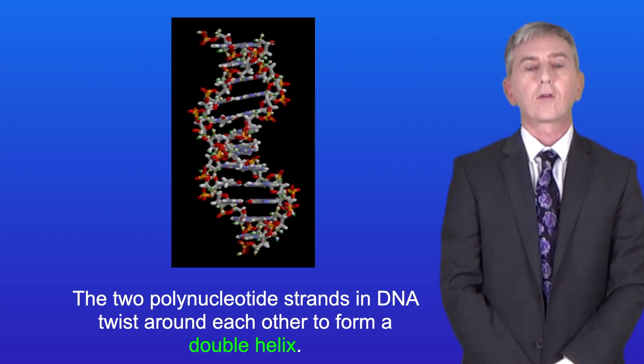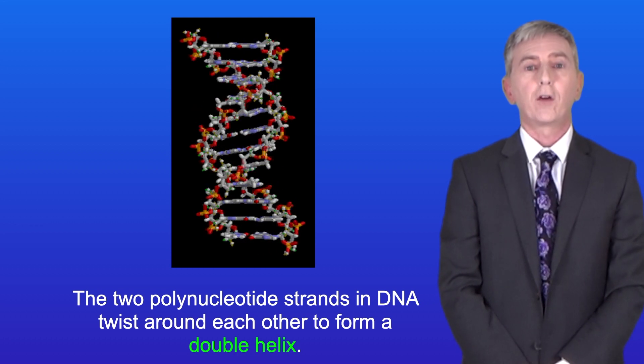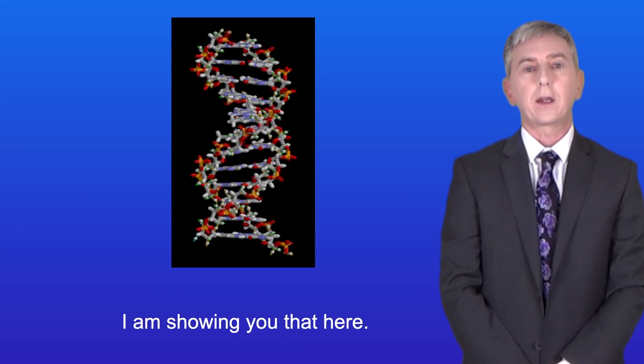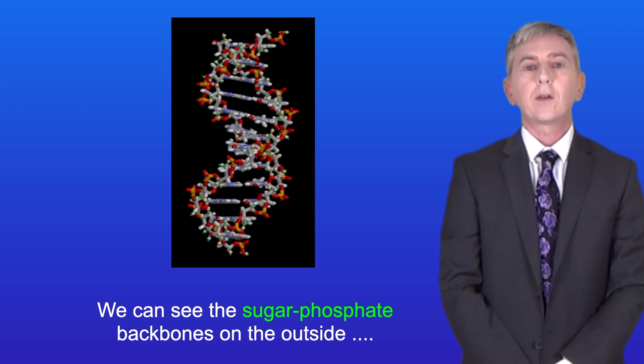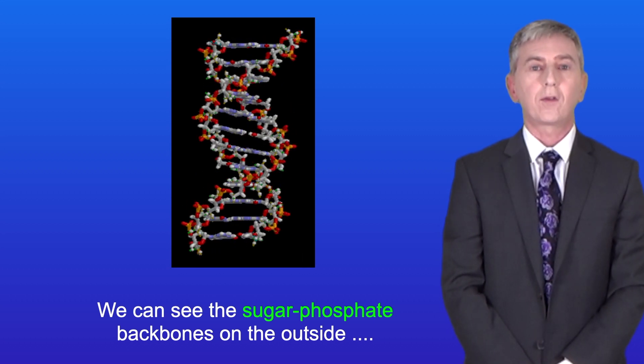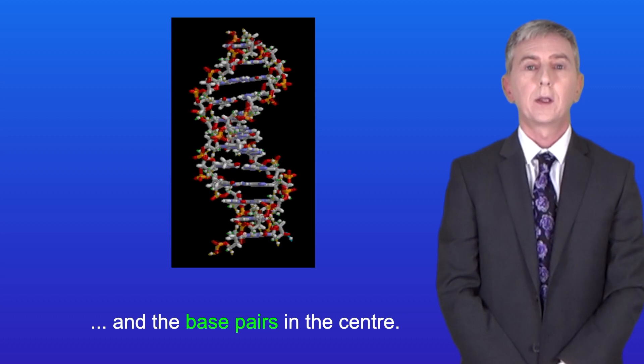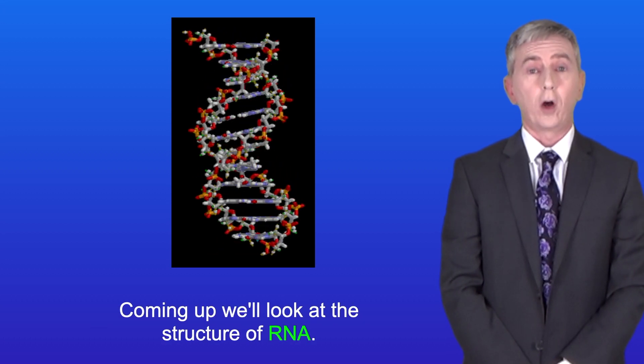Now the two polynucleotide strands in DNA twist around each other to form a double helix and I've shown you that here. So we can see the sugar phosphate backbones on the outside and the base pairs in the center. Coming up we look at the structure of RNA.